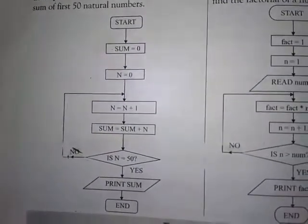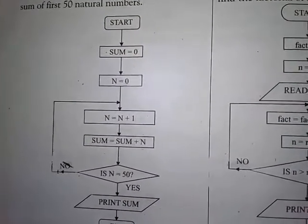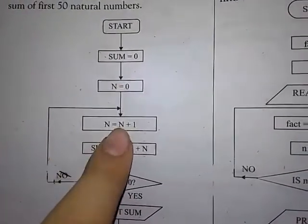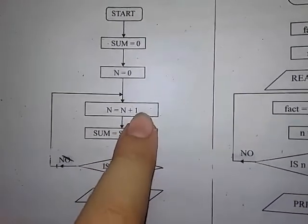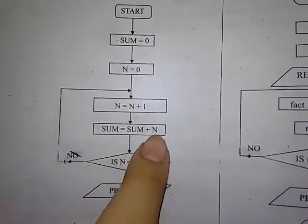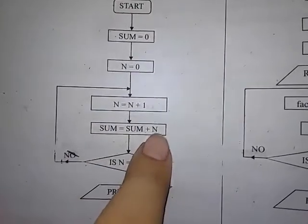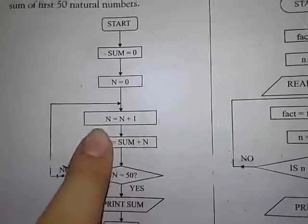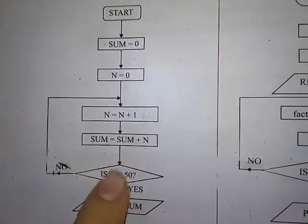پہلا natural number لینے کے لئے n = n + 1 کریں گے، یعنی zero میں 1 plus کر کے n = 1 آ جائے گا۔ پھر sum = sum + n یعنی 0 + 1 = 1، sum میں 1 store ہو جائے گا۔ اب condition check کریں گے diamond shape میں کہ آیا n برابر 50 ہو گیا ہے یا نہیں۔